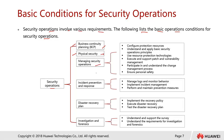We also have managing security operations, with subcategories including incident prevention and response, disaster recovery planning, and investigation and forensics. In terms of managing security operations, we should configure protection resources, understand and apply basic security operation principles, and use resource protection technology — as simple as antivirus and patch update servers. For Windows, we have WSUS servers. We also need to execute and support patch and vulnerability management.